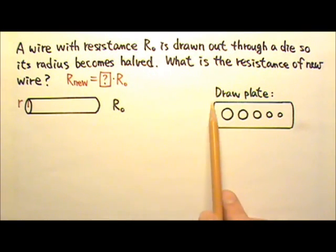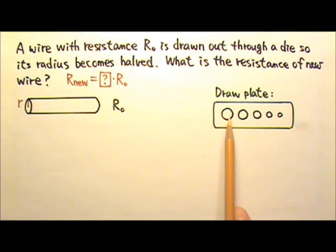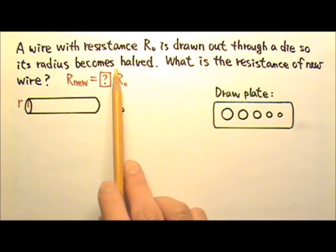When we make a wire thinner using a draw plate, we stick one end of the wire into the next size hole and then pull it out with a steady force, then the next size hole, then the next, until the wire becomes one with the desired thickness. In this case, the radius becomes halved.